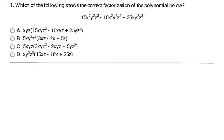To find the greatest common factor, you're going to look at your numbers — your coefficients — first. Here I have 15, 10, and 25. What is the largest number they all have in common? Five. So that means I'm going to write a five down.